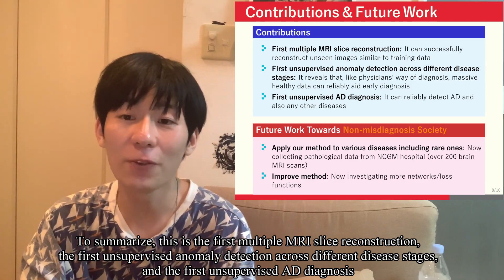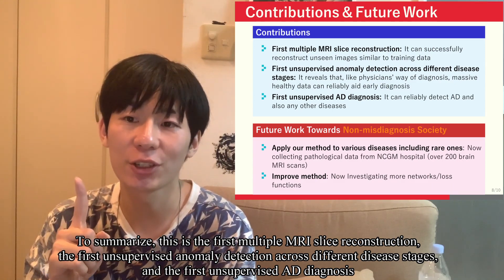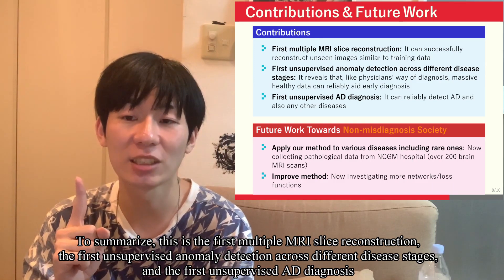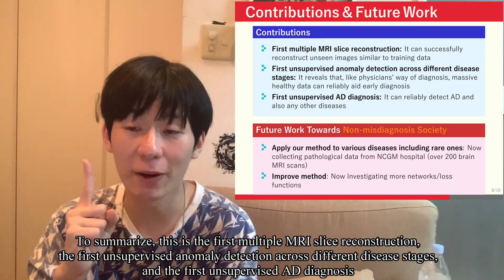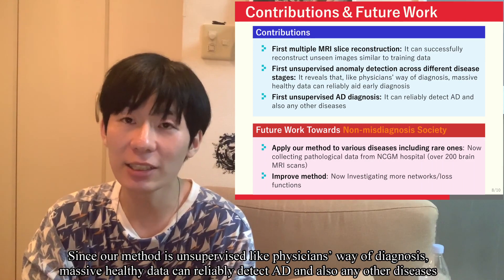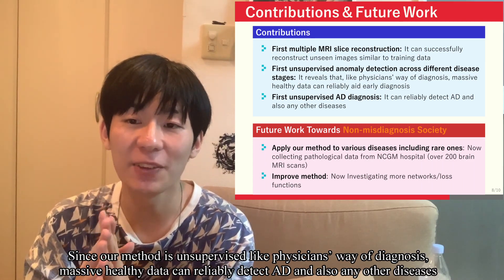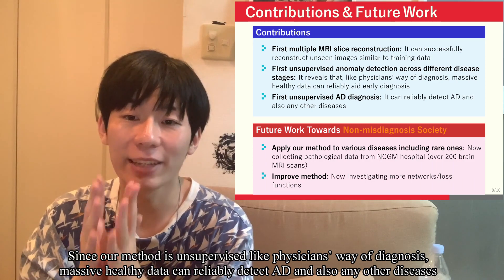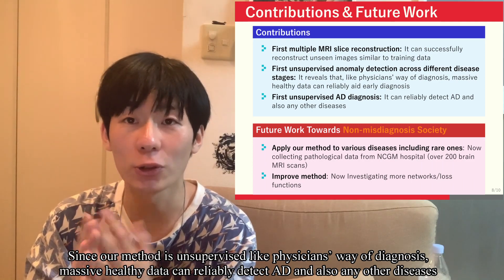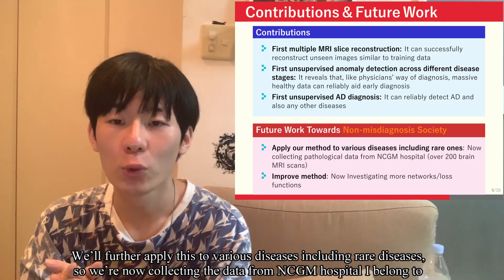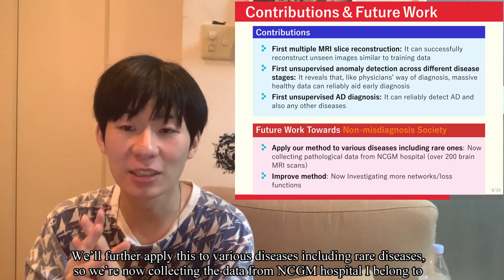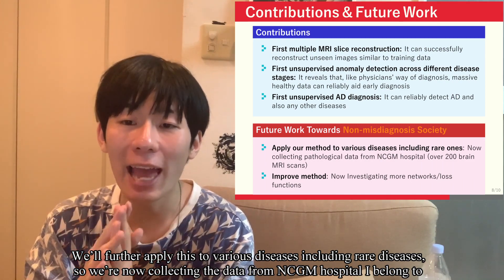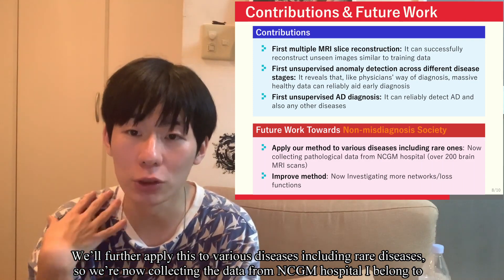To summarize, this is the first multiple MRI slice reconstruction, the first unsupervised anomaly detection across different disease stages, and the first unsupervised AD diagnosis. Since our method is unsupervised, like a physician's way of diagnosis, massive healthy data can reliably detect AD and also any other disease. We will further apply this to various diseases including rare diseases.